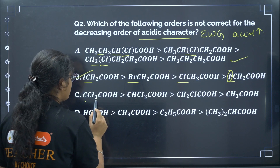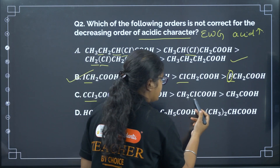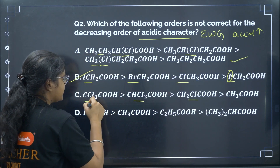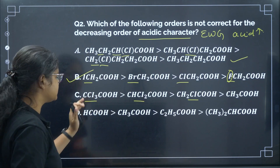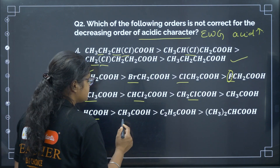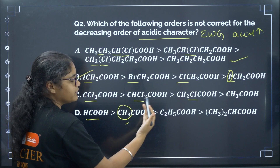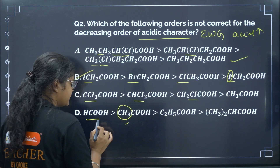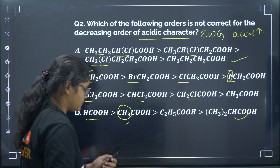Continuing the same question: the compound with 3 chlorines stabilizes the conjugate base more than 2 or 1 chlorine, so that order is correct. And more hydrocarbons means more instability of the conjugate base, so that order is also correct.